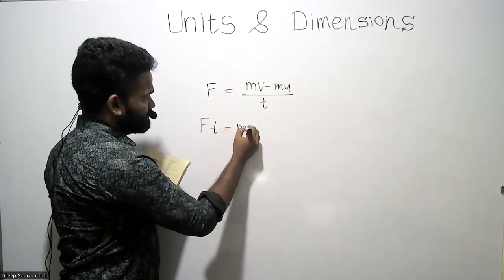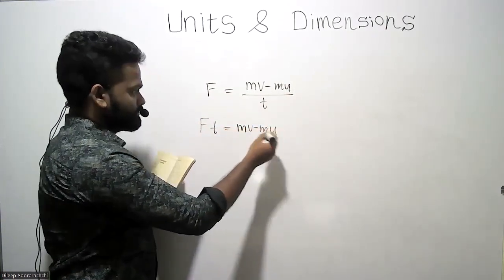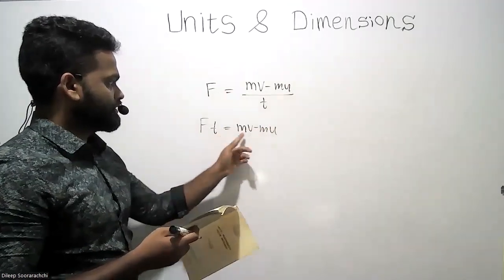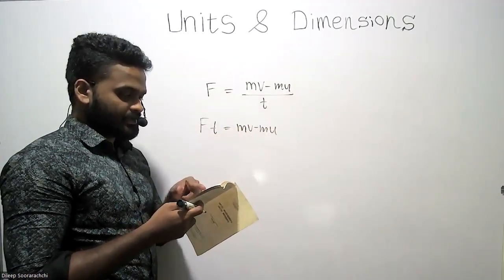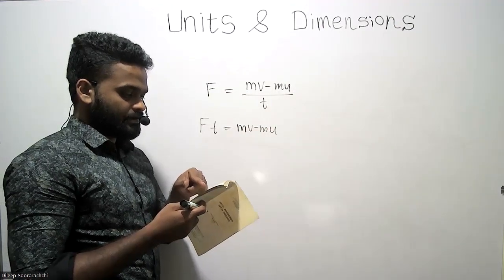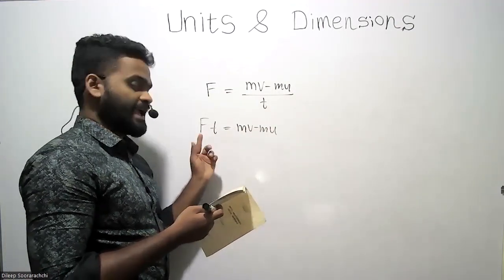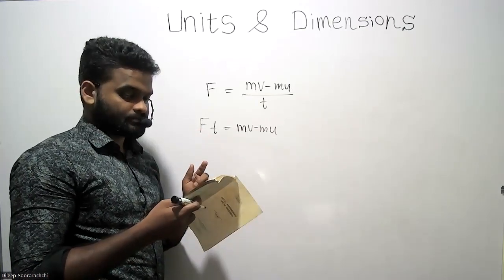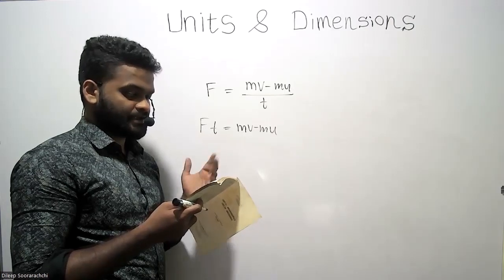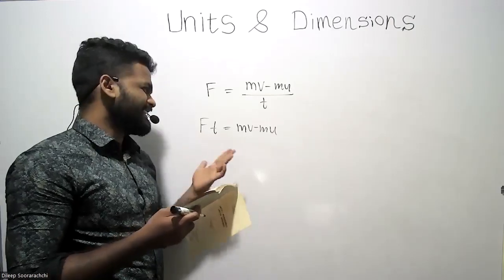Force times time is mv minus mu. So you can say that force times time is change of momentum. Obviously momentum is what we can calculate by multiplying force by time, so the answer should be the second one. The other answers are not valid here.